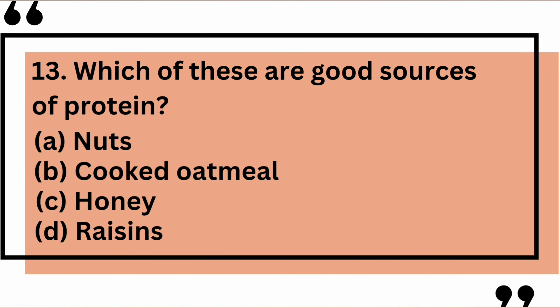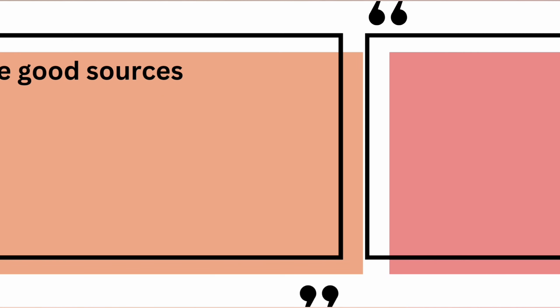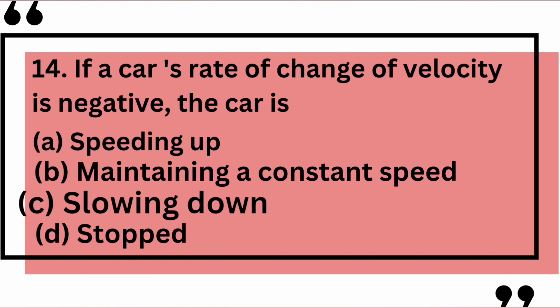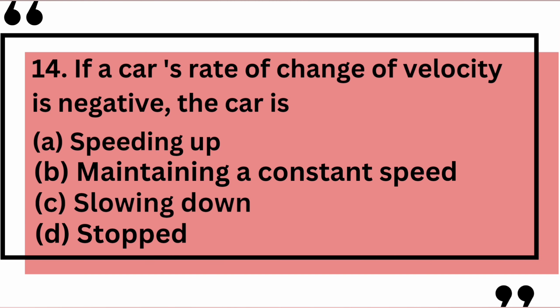Which of these are good sources of protein? Yes, the correct answer is A: nuts. If a car's rate of change of velocity is negative, the car is — the correct answer is C: slowing down.